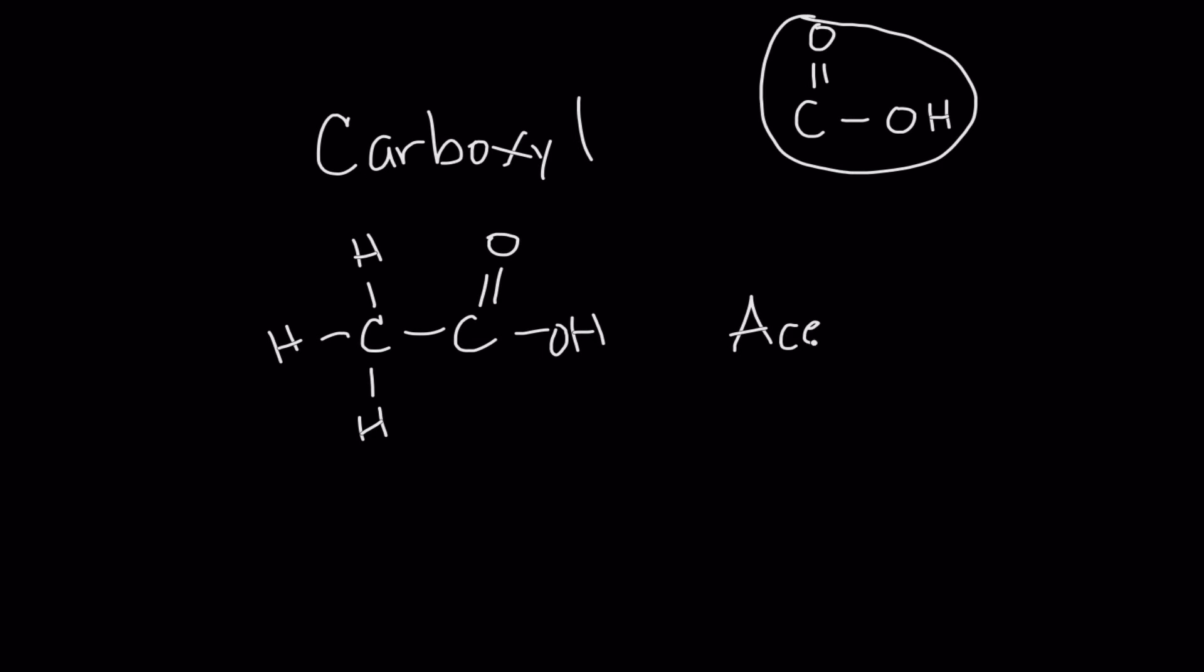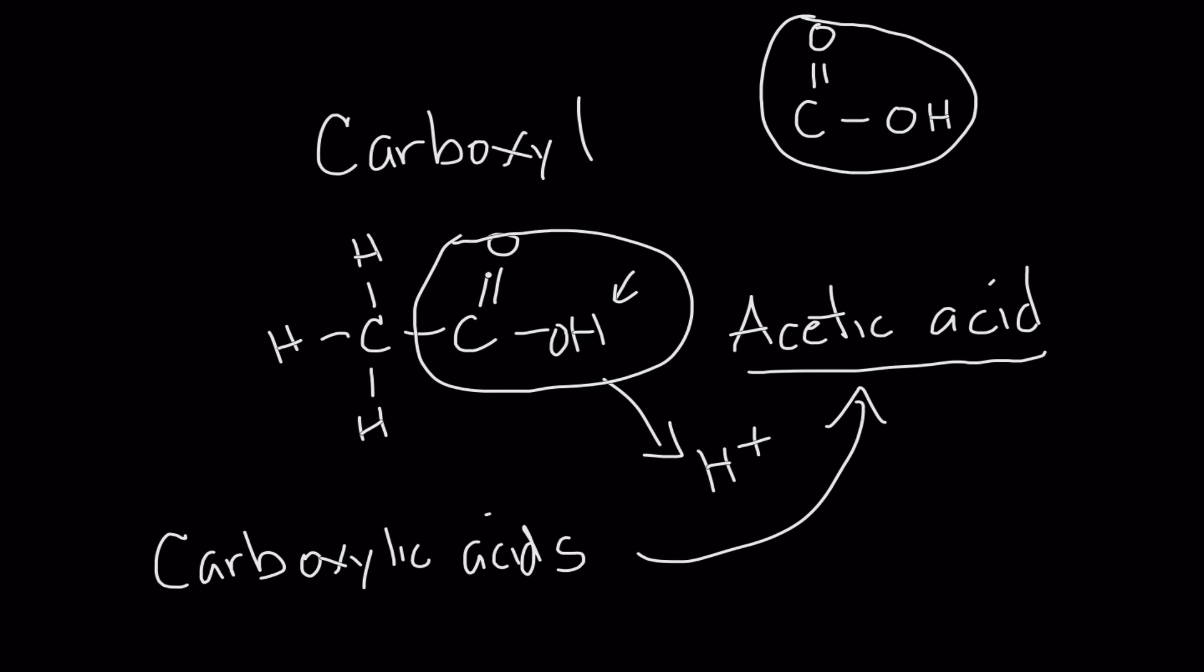So this whole thing is a carboxyl group and carboxyl groups produce acids. So what I've just drawn here is an organic acid called acetic acid, happens to be the acid in vinegar. Because what happens is when you mix this with water this hydrogen right here can dissociate and form hydrogen ions which of course lower pH, so it makes this an acid. So carboxyl groups form carboxylic acids, for example acetic acid.